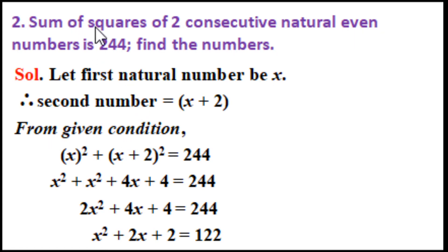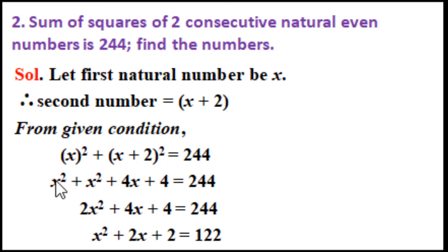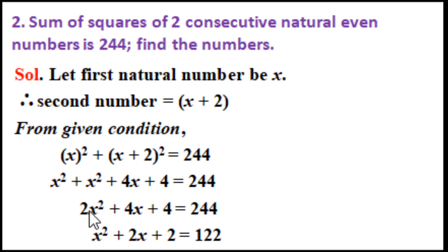From the given condition, the sum of their squares is 244. So x squared plus (x plus 2) squared equals 244. Expanding using the formula (a plus b) squared equals a squared plus 2ab plus b squared: x squared plus x squared plus 4x plus 4 equals 244, giving 2x squared plus 4x plus 4 equals 244. Taking 2 as common factor.